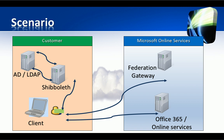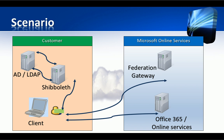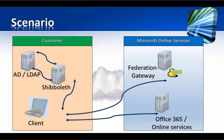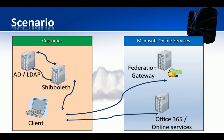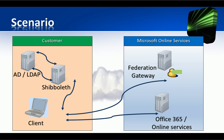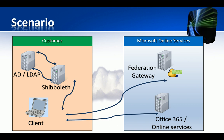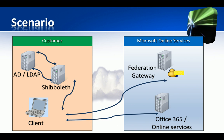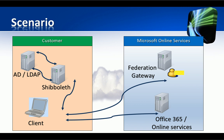and a user ID known as immutable ID. Such assertion is validated by the Federation gateway, which we previously configured to accept tokens created by our Shibboleth server, and then the user is given another token which she can finally present to the online service to get access.